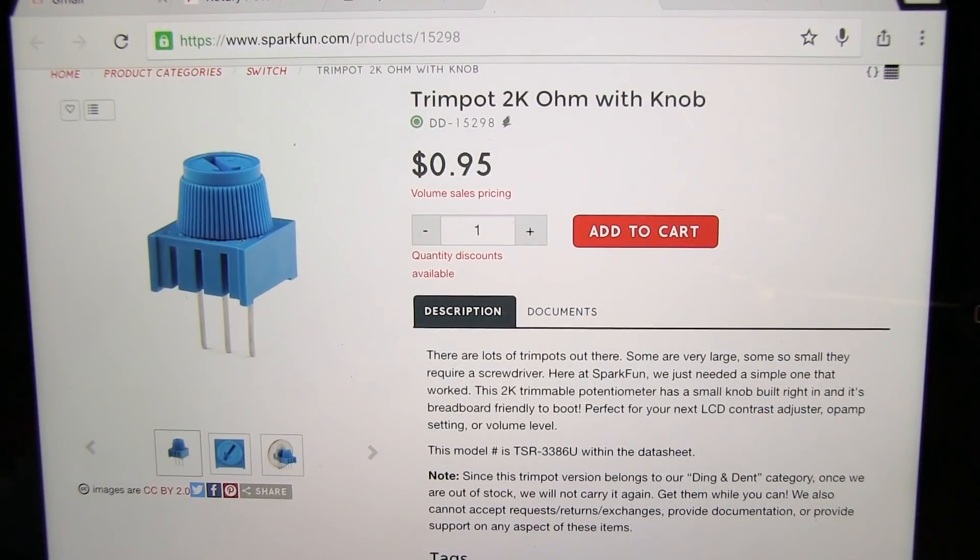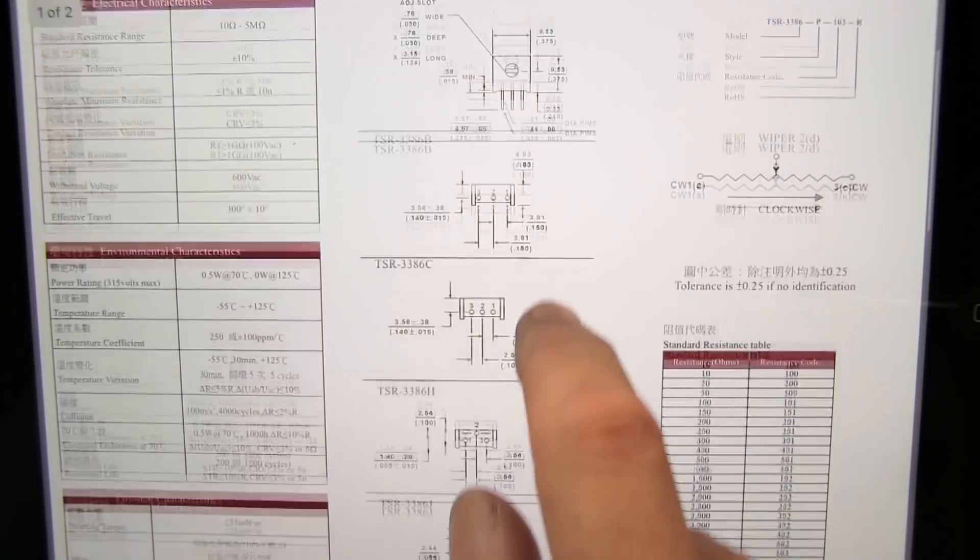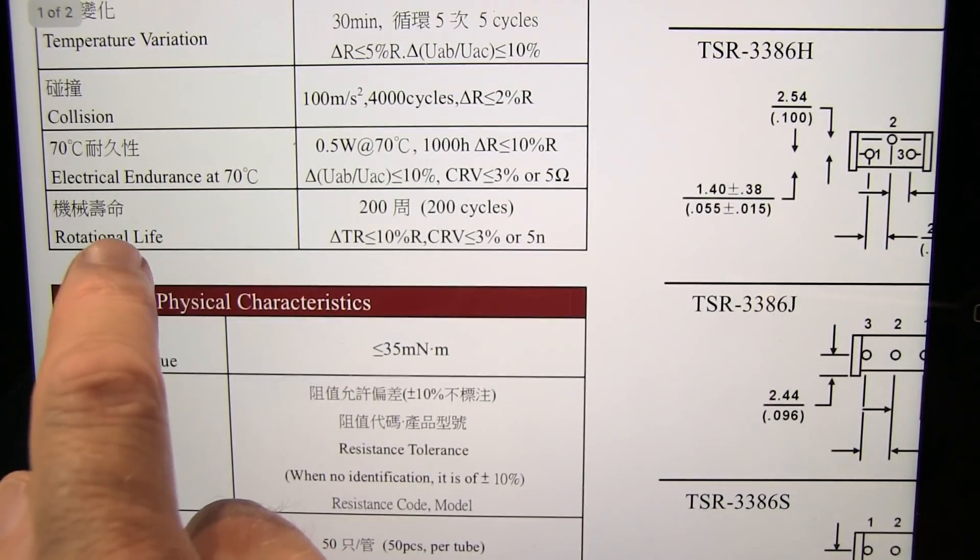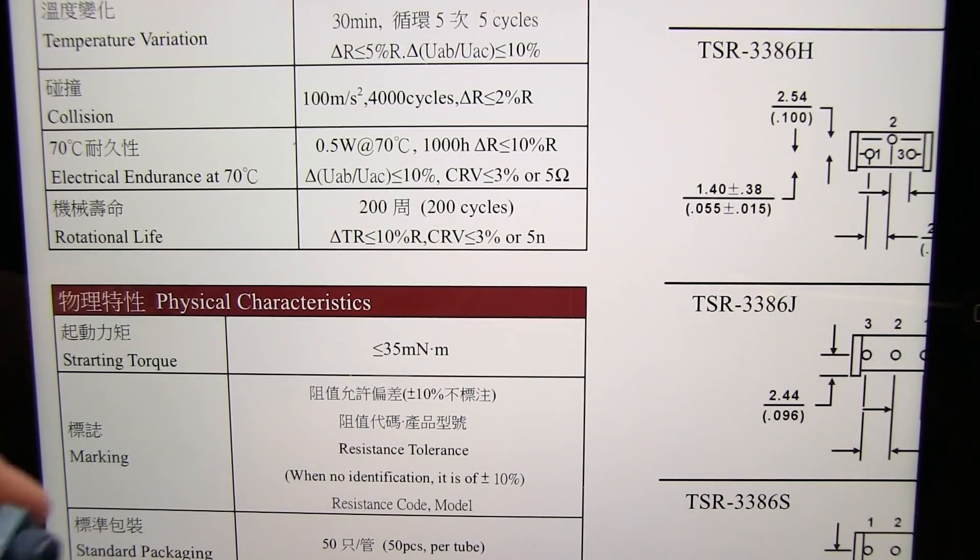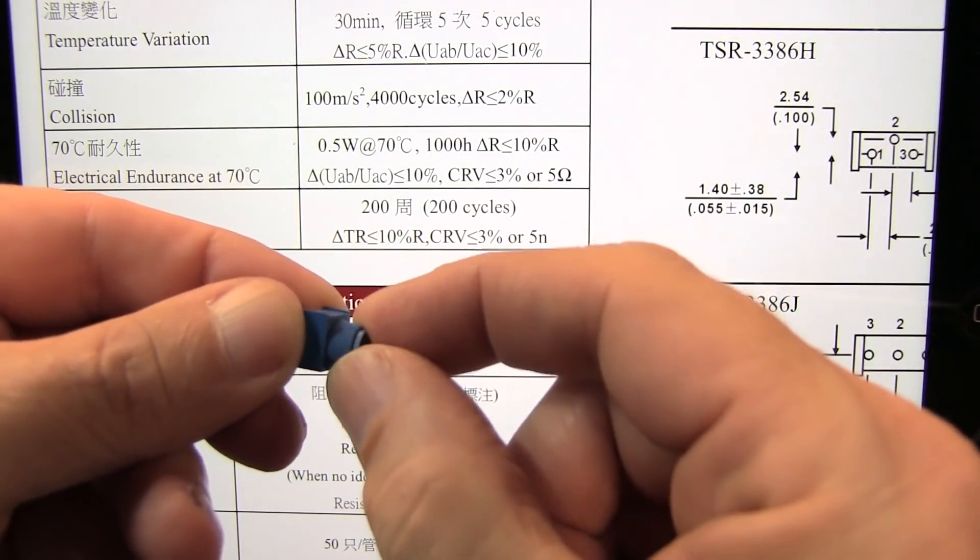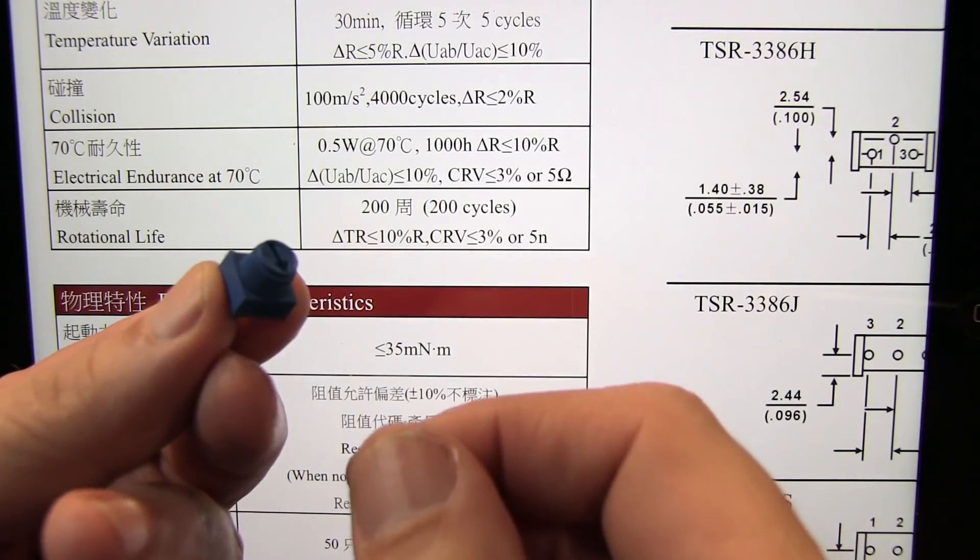So here's a typical part being offered by SparkFun, a little trim pot with a knob, and even mentions using it as a volume control. But let's take a look at the datasheet. So here's the datasheet for that part. If you scroll down in the specs here and take a look at this parameter right here, the rotational life, is 200 cycles. That means that rotating this knob across the element 200 times is all the life that this thing is rated for.